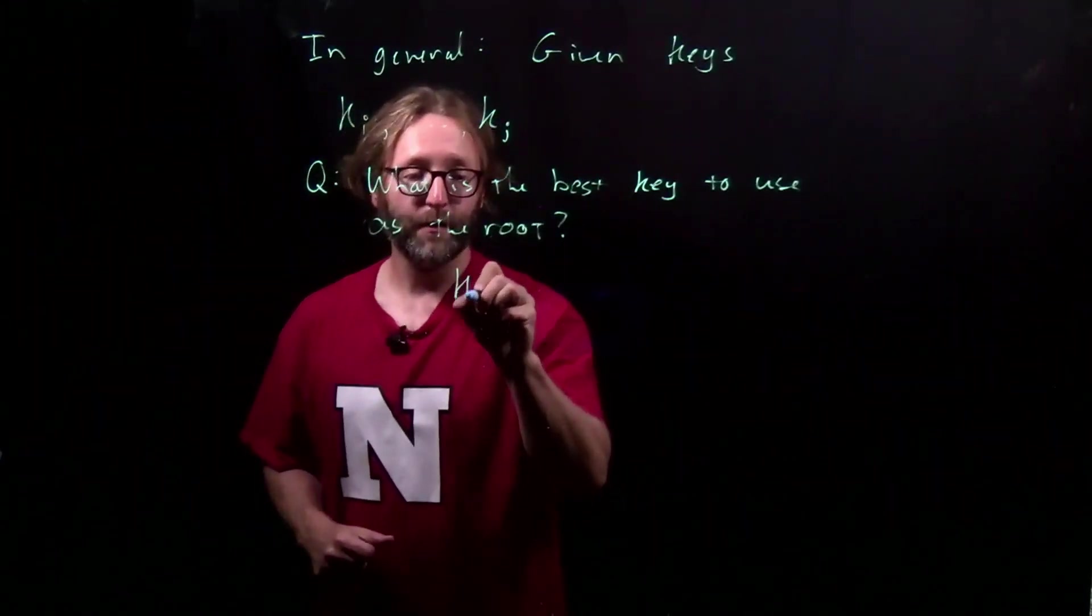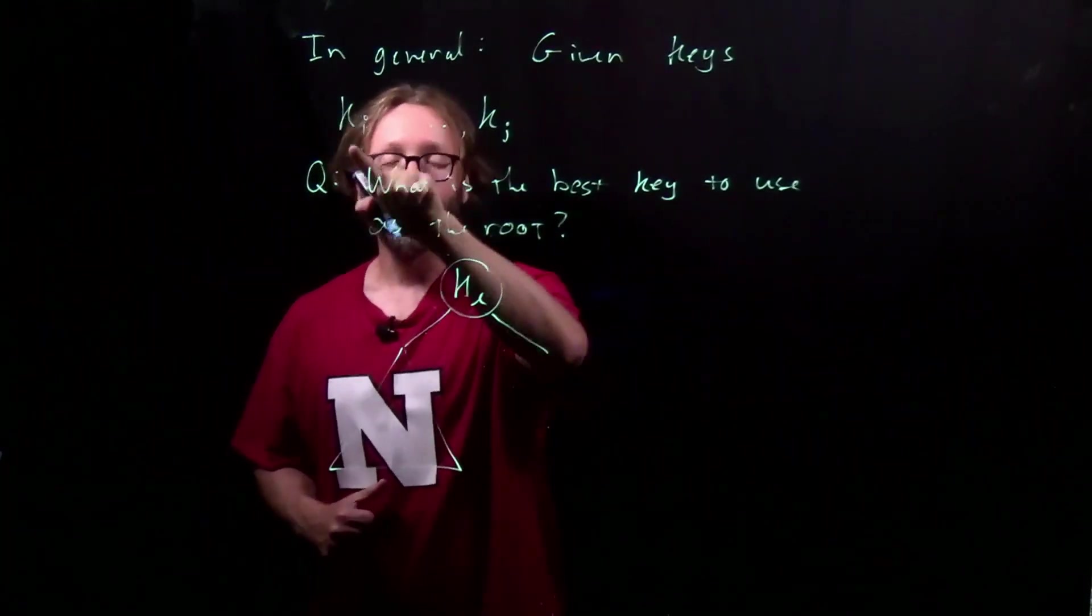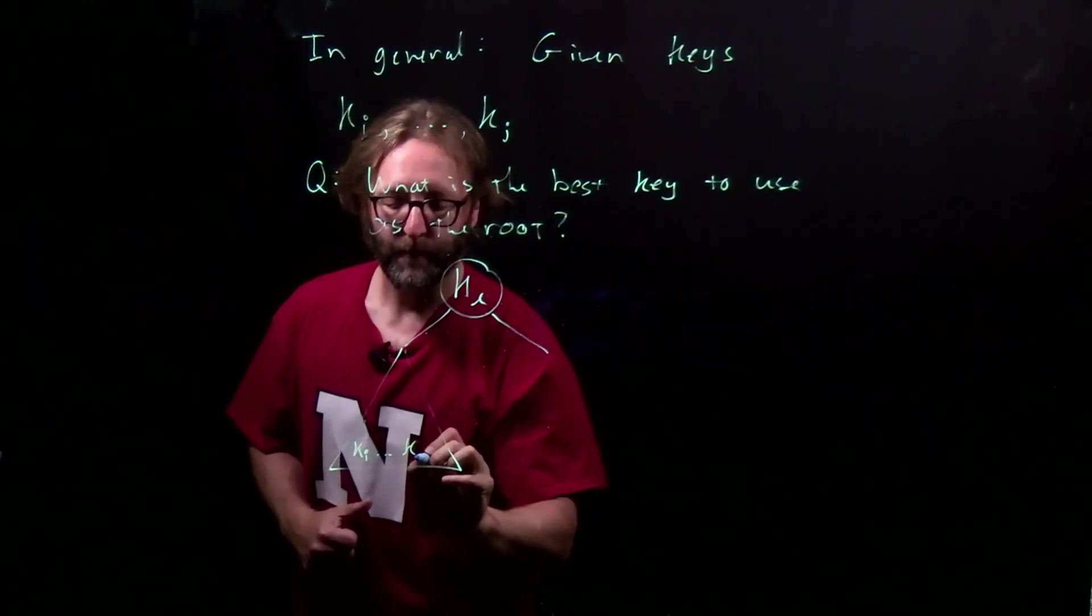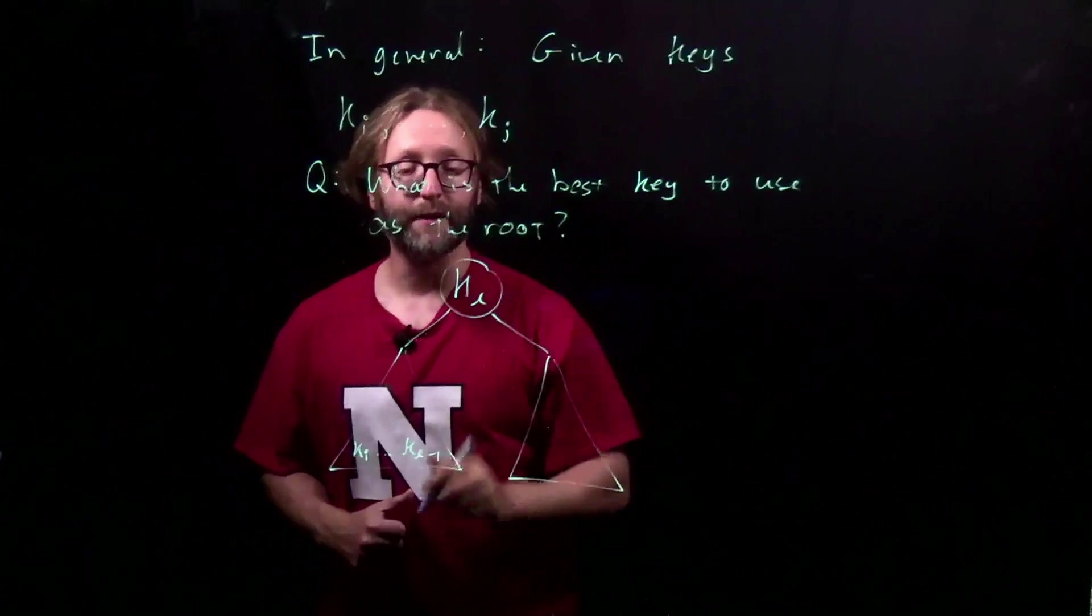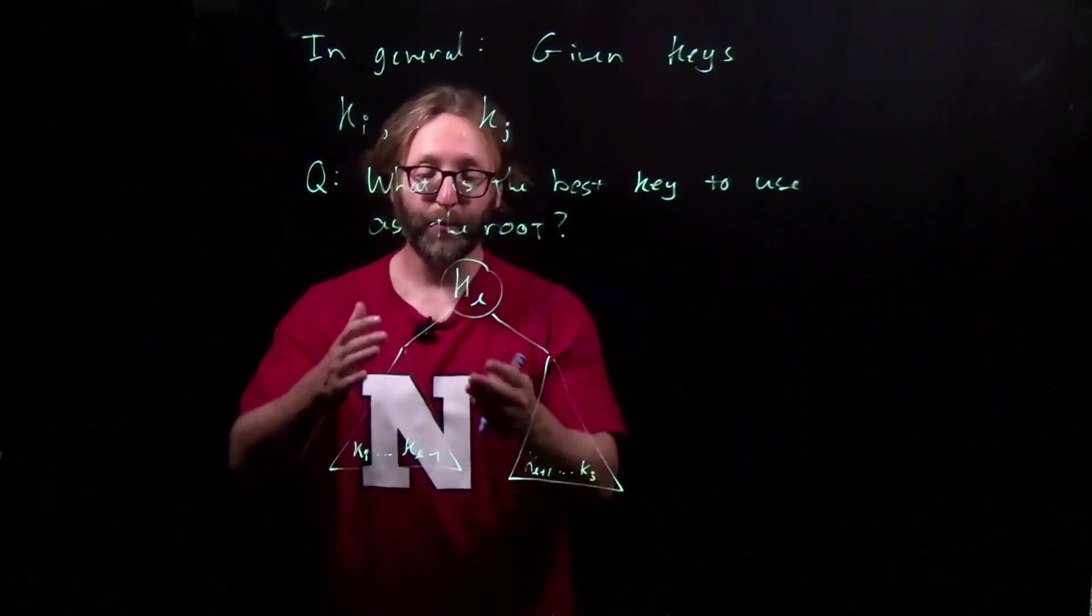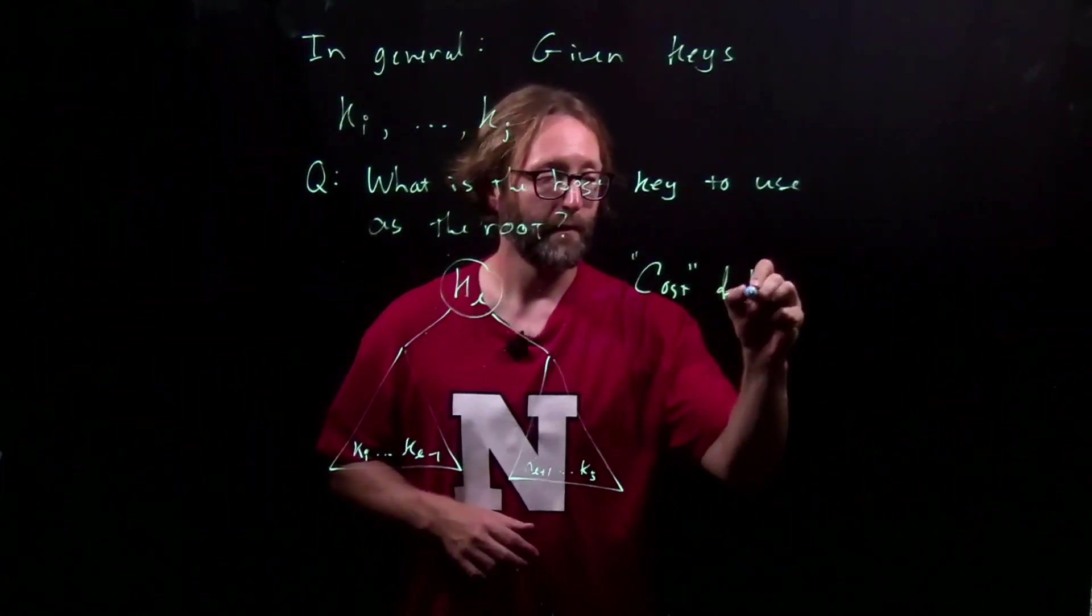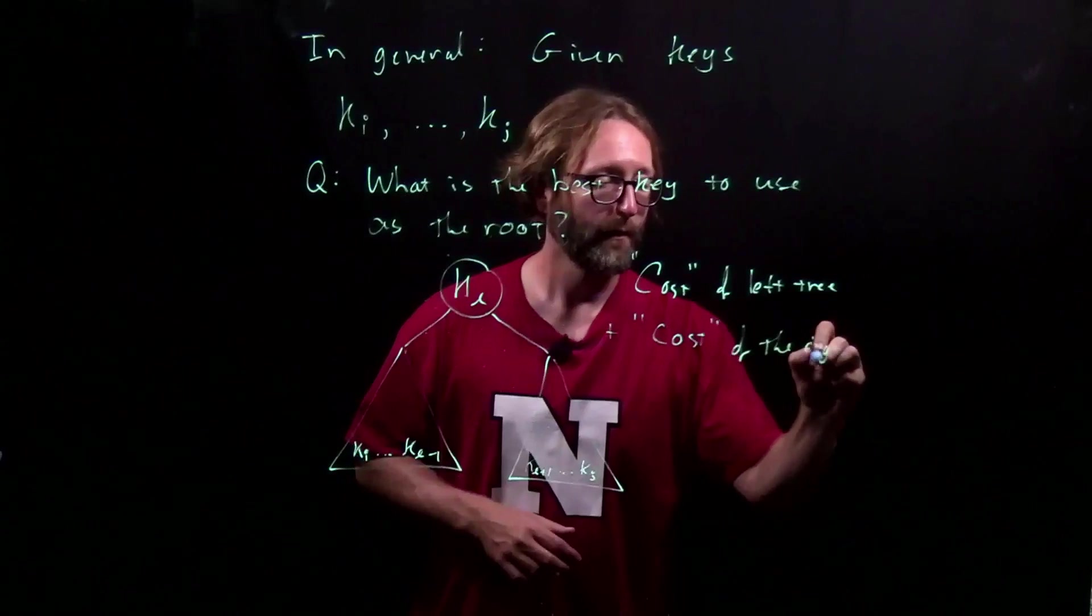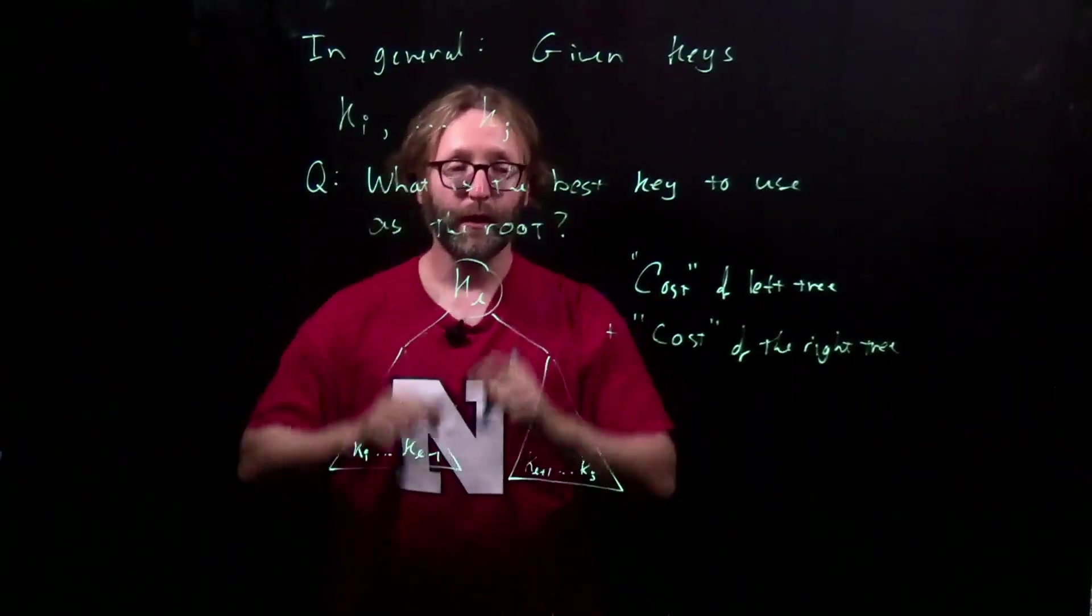Let's suppose that we've chosen K sub L. That means in the left subtree, it will contain keys KI up to, but not including, KL. So keys KI through KL minus 1. And in the right subtree, it will contain all the other keys that come after KL.